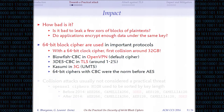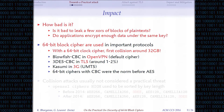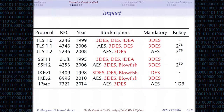64-bit block ciphers are actually used in a lot of protocols — for instance, in OpenVPN, in TLS, in 3G telephony. Basically all the protocols designed before AES was standardized, because the main block ciphers available at the time were 64-bit block ciphers. For instance, TLS, SSH, IPsec — all the early versions only had 64-bit block ciphers available, and later versions added AES mostly.